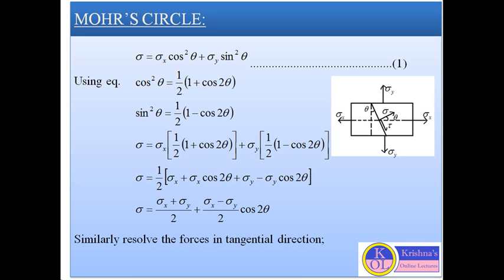You can go through my previous lecture on stresses due to the state of biaxial stress to understand how to derive this equation. After finding this equation, by substituting cos²θ equal to (1/2)(1 + cos 2θ) and sin²θ equal to (1/2)(1 − cos 2θ), we will get the simplified equation.